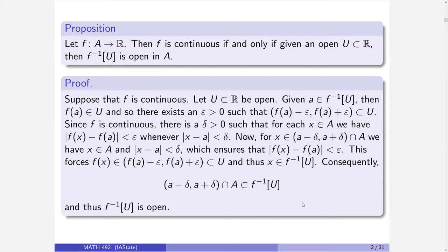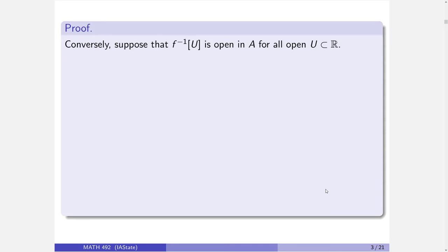Beautiful. I love this proof — this is definitely one of my favorites. It's incredibly elegant, because every sentence here, every little step we do is just restating the definitions we've got. Start with continuity. Take an open set. Pick an element in here. That means you're in the open set. That means you've got an epsilon. By continuity, you've got a delta.